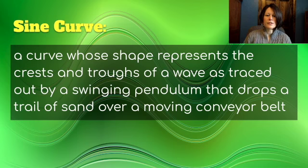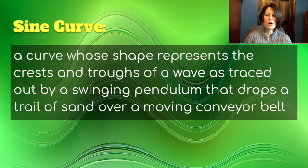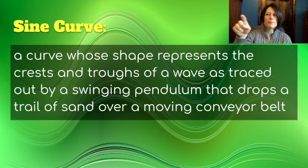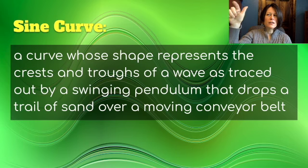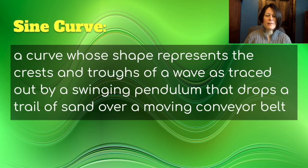A sine curve is produced by this type of motion. It's a curve whose shape represents the crests and troughs of a wave — traced out by a swinging pendulum that drops a trail of sand over a moving conveyor belt. Imagine a funnel filled with sand swinging back and forth, leaving a trail of sand. If the paper is not moving, you get a straight line, but if the paper is moving, it becomes an S shape — just like the background here.